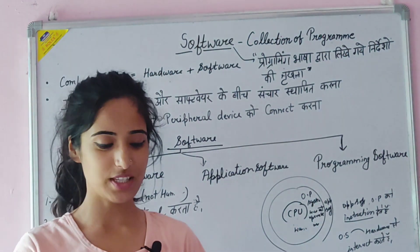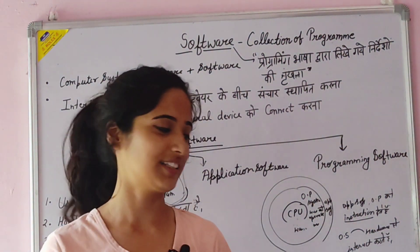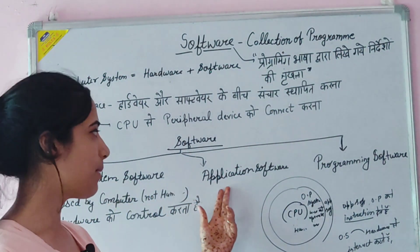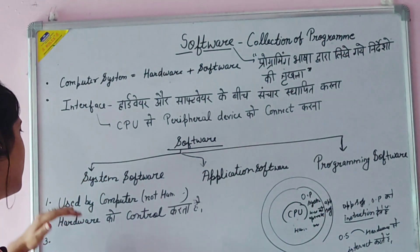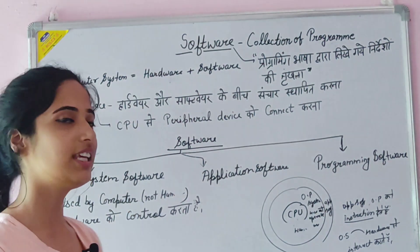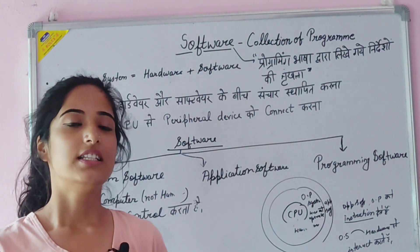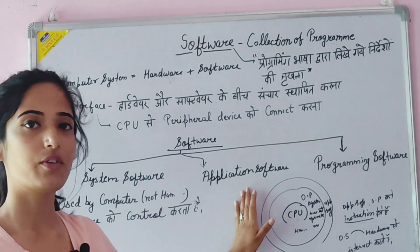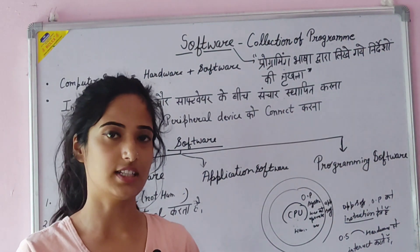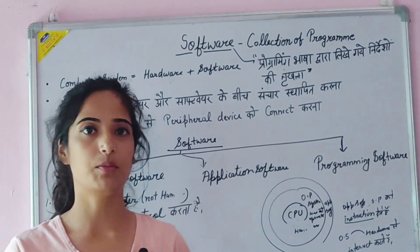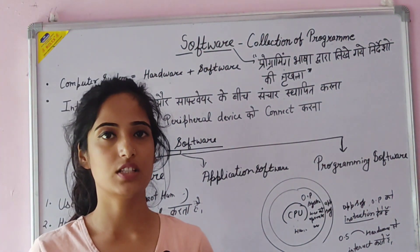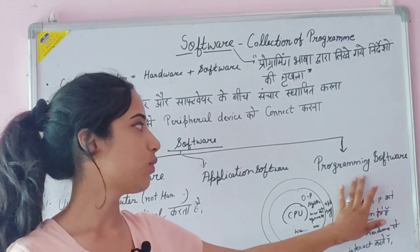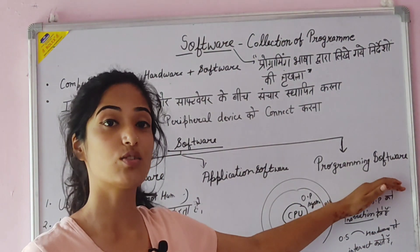What are the types of software? As written in this book, there are three types of software. One is system software, the second is application software, and the third is programming software. System software is used by the computer itself — we do not use it directly. Application software is what we users use. Programming software is used to make programs.